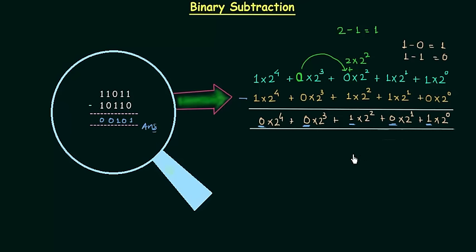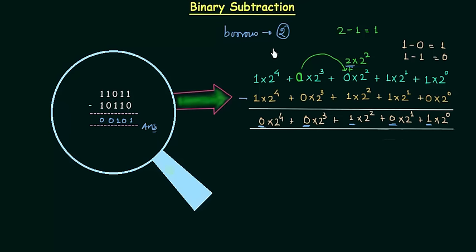Subtraction is very simple. The only thing you have to keep in mind is while taking borrow — borrow is 2, not 1. Because you are taking 1 from the next position; once that 1 moves to this position it becomes 2. So 2 minus 1 gives us 1. If you know that borrow is 2, you will make no mistake in binary subtraction. This is the only important thing.